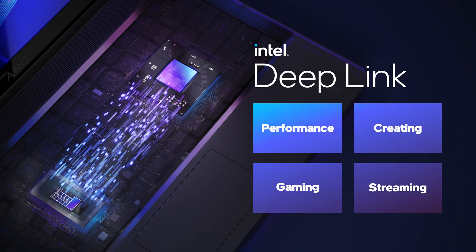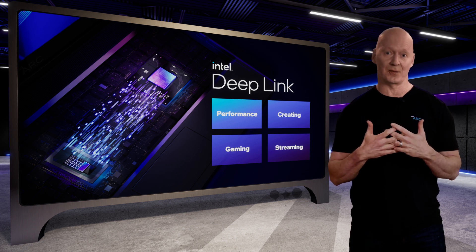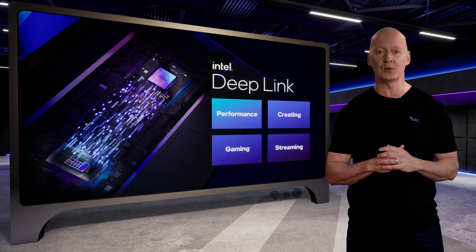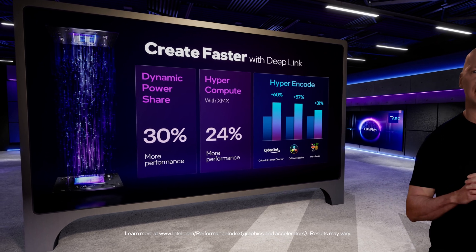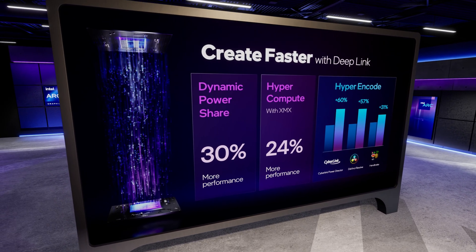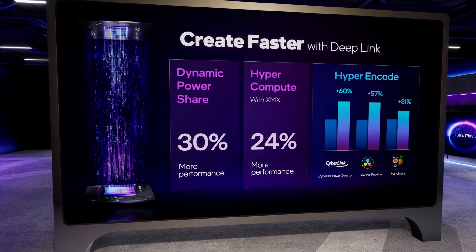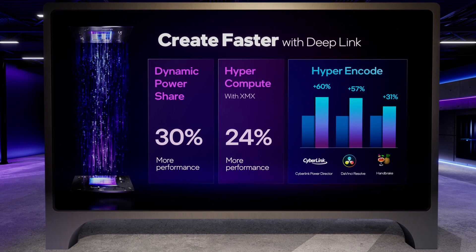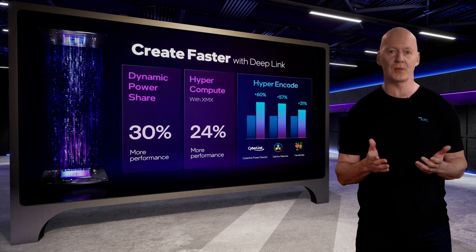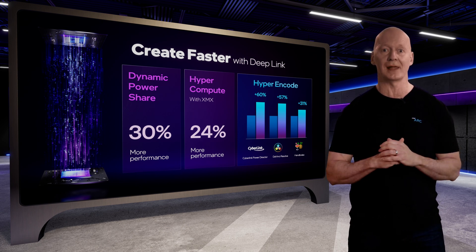This is why we developed Intel Deep Link, a collection of technologies supported by every Arc-based mobile platform. With Deep Link, Arc GPUs work seamlessly with Intel CPUs and our integrated graphics to boost performance for gaming, creating, and streaming. It enables dynamic power sharing, intelligently distributing power across the platform to increase application performance up to 30% on creation and compute-intensive applications. It also includes hyper-compute, which enables a significant speed-up in AI-heavy applications. In the XMX video demo we showed earlier, we saw an additional 24% performance improvement when we leverage all available AI engines in the system.